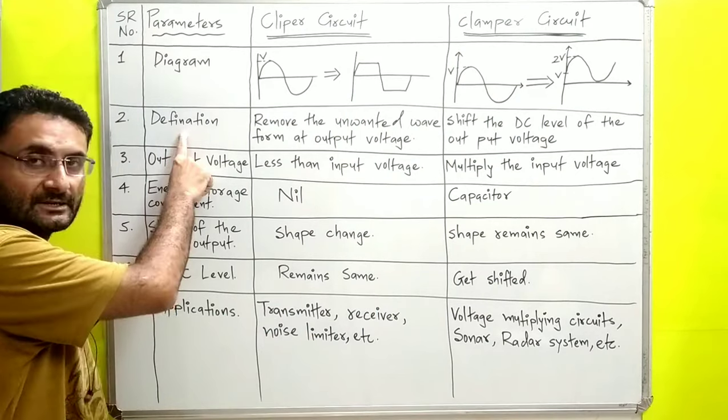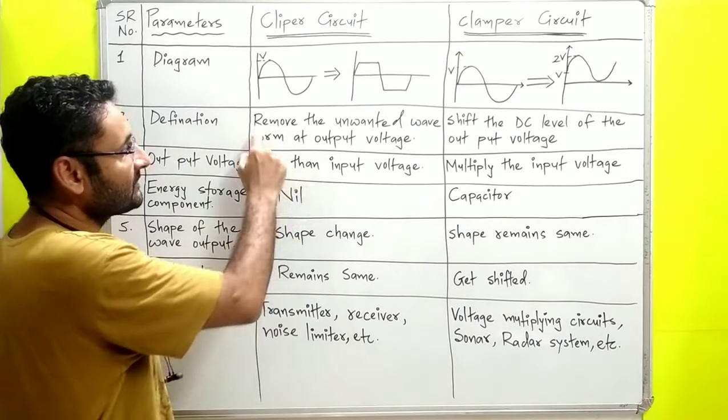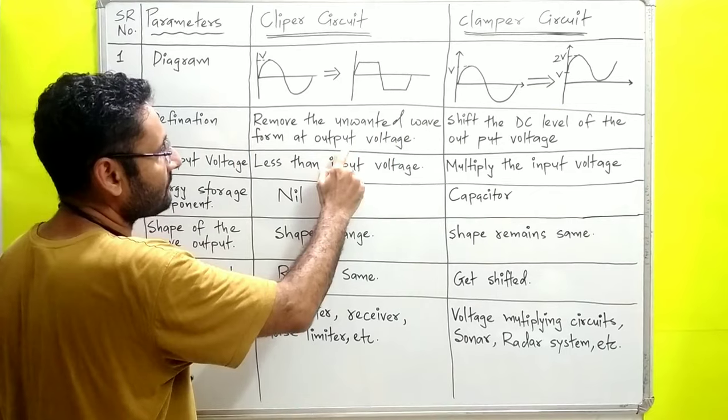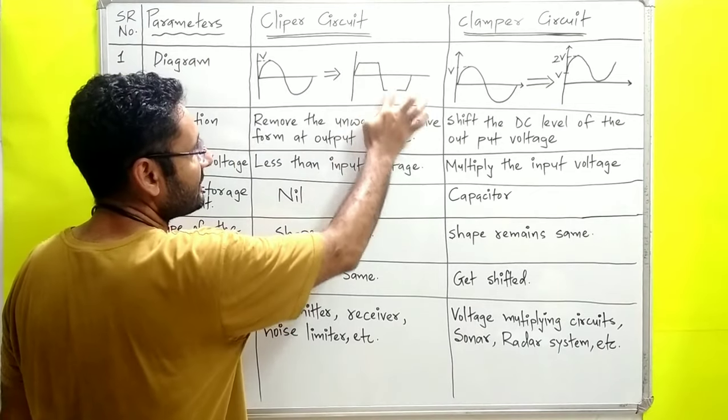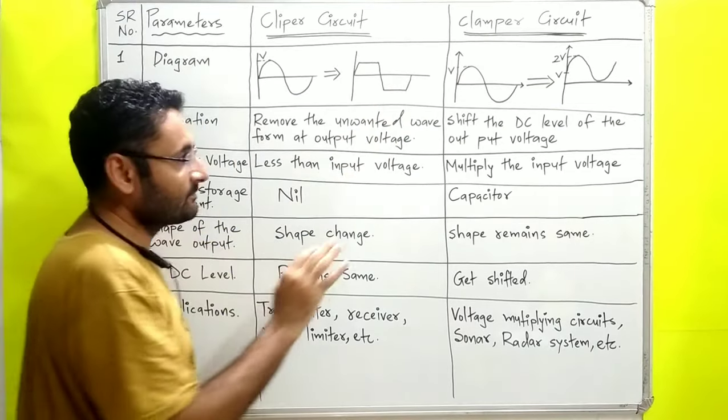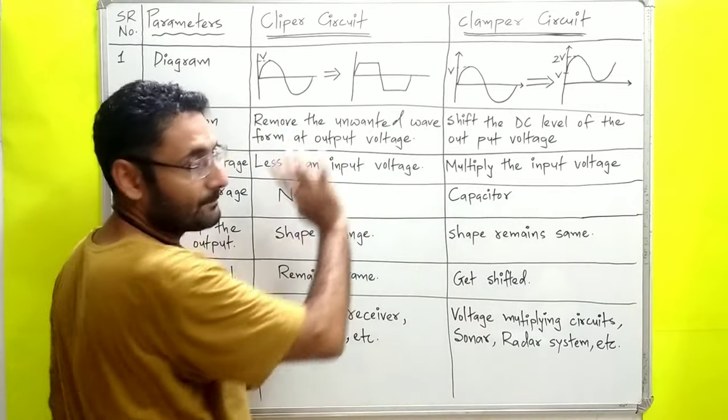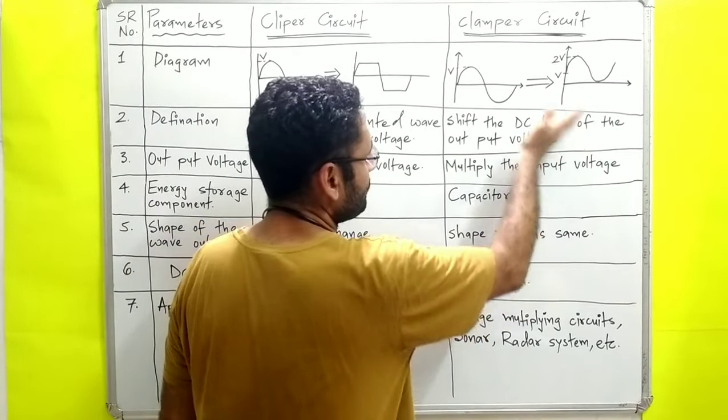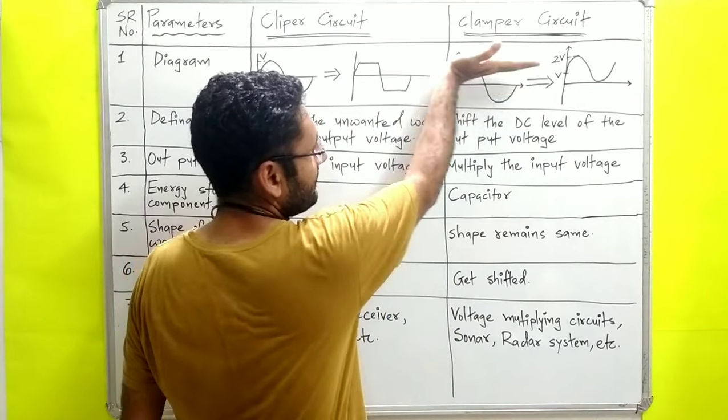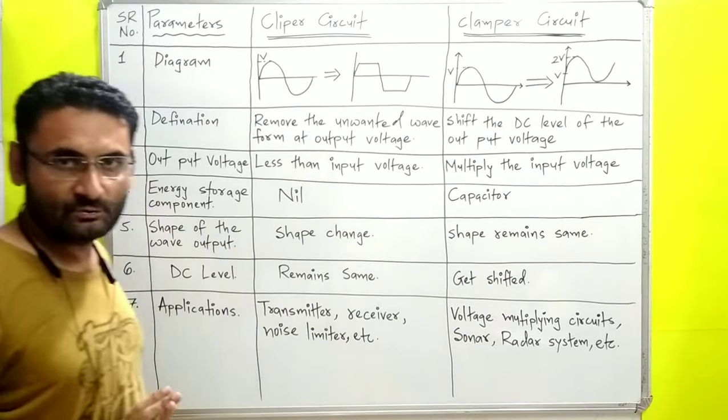The second is the definition. In the clipper, we remove the unwanted waveform at the output voltage. In the clamper, we shift the DC level of the output voltage, either up or down.